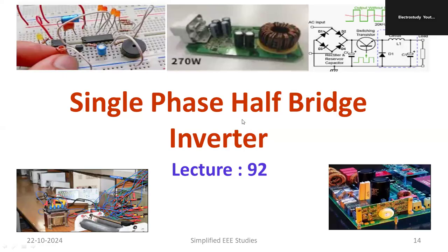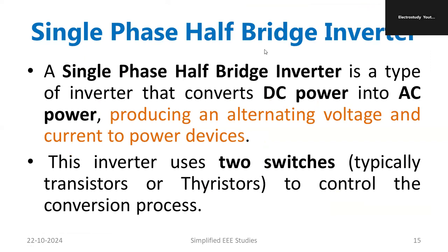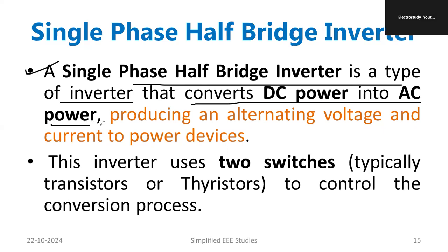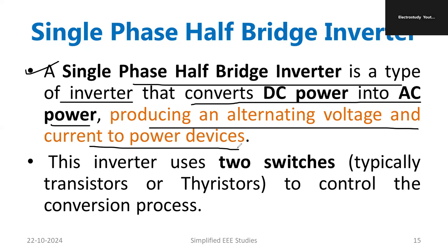Welcome to the lecture series on power electronics. In this session I am going to discuss how the single-phase half-bridge inverter operates. A single-phase half-bridge inverter is a type of inverter that converts DC power into AC power, producing an alternating voltage. Using a half-bridge inverter you can convert DC power into AC power.